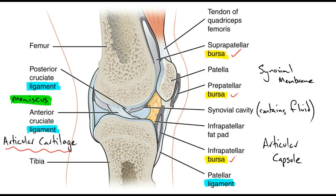Our meniscus, which wasn't shown in the diagram above — here's one, and there's the other, sitting in our knee. They are wedge shapes and help with shock absorption. For example, when you're jumping, so that the femur and the tibia don't jar against each other. They help soften the impact and assist with shock absorption.